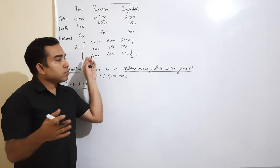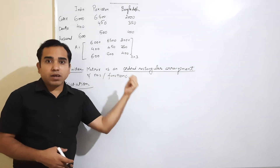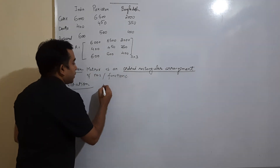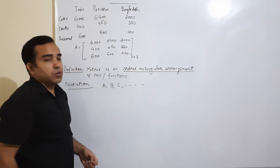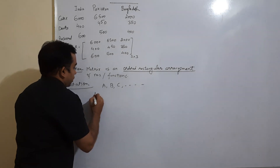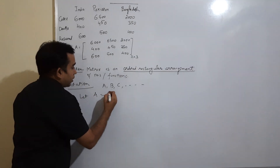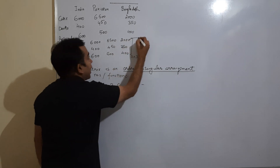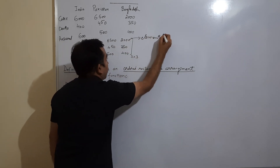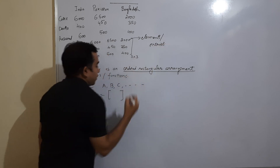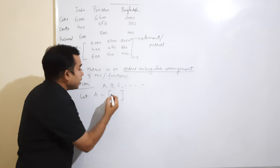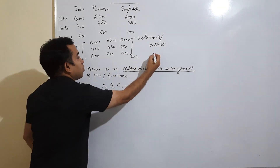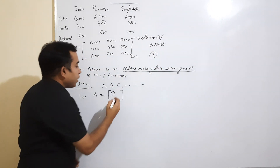Now, how do we denote a matrix? Since we may need to refer to it again and again, we assign symbols. Generally we use capital English alphabets to denote a matrix. The individual numbers inside the matrix are called its elements or entries. Suppose the matrix is capital A — its entries are denoted by small 'a'. Since there are many entries — for example, nine entries here — we attach indices i and j.